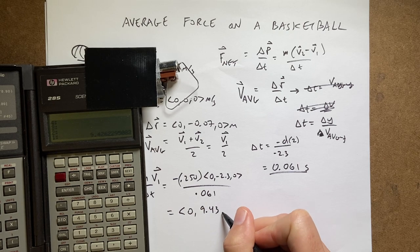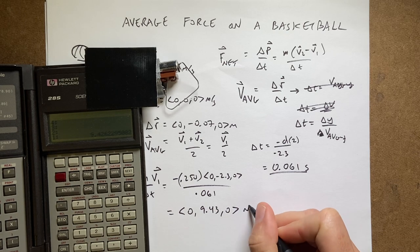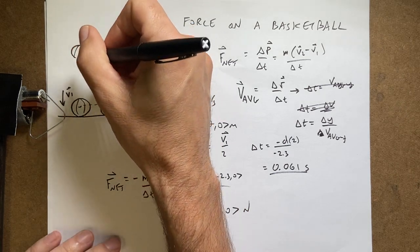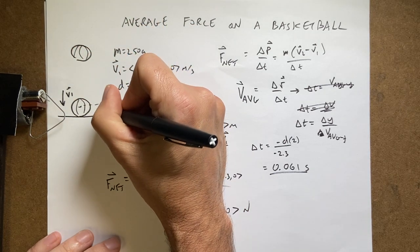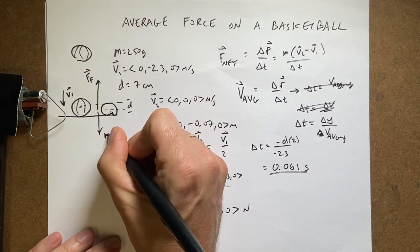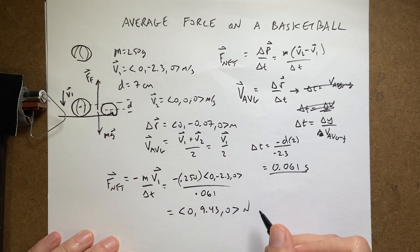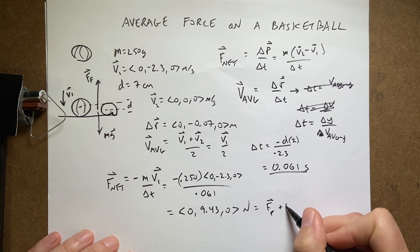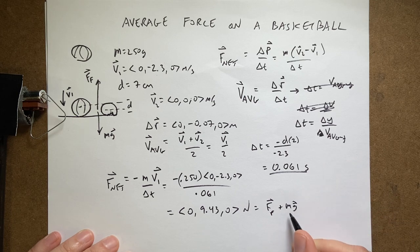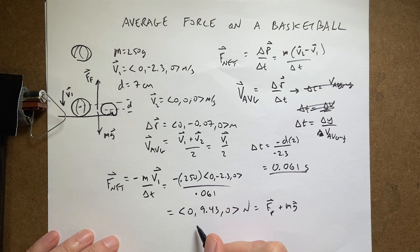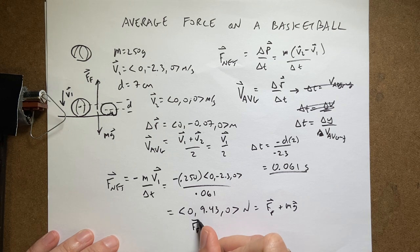9.430 newtons, that's the net force. If I want to find the force from the ground I would have to do this. Right here is my floor, F_floor, and then I have the gravitational force mg. So this is actually equal to F_floor plus mg, where g is the vector negative 9.8 in the y direction.